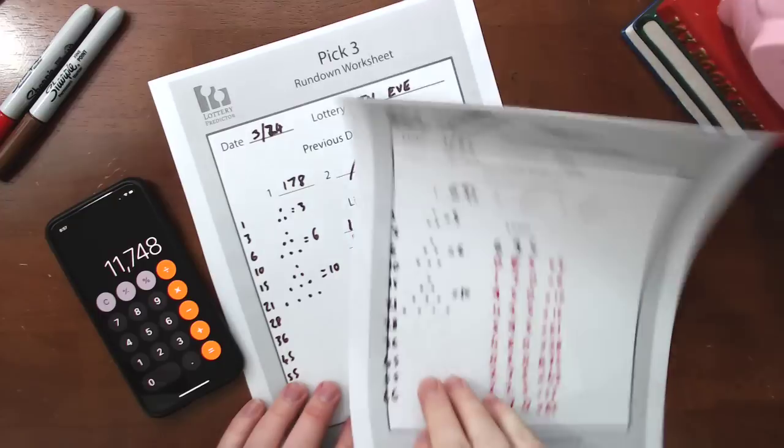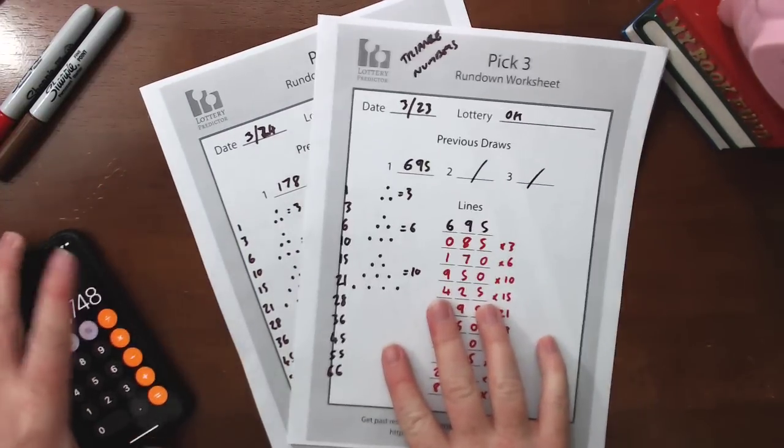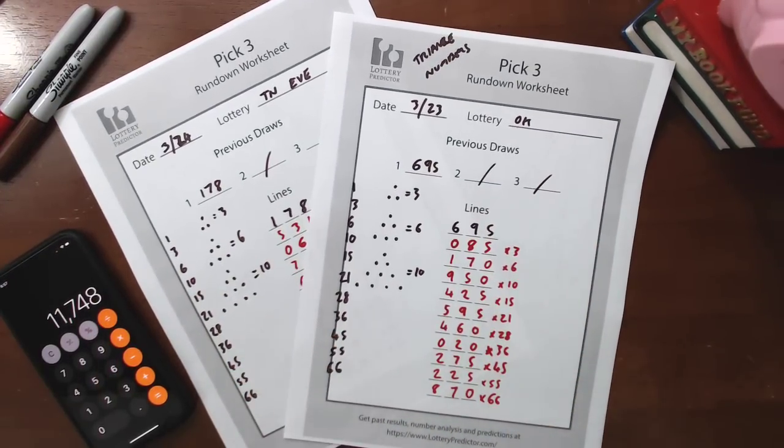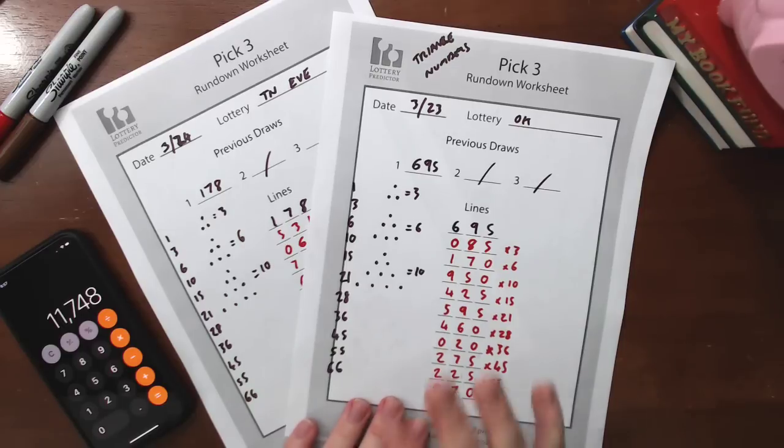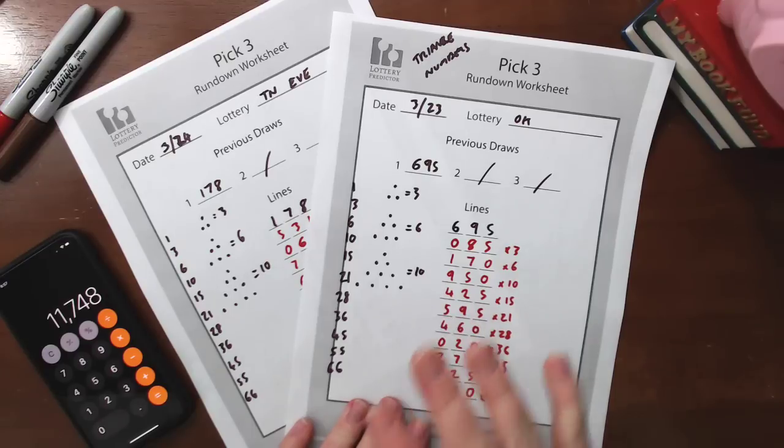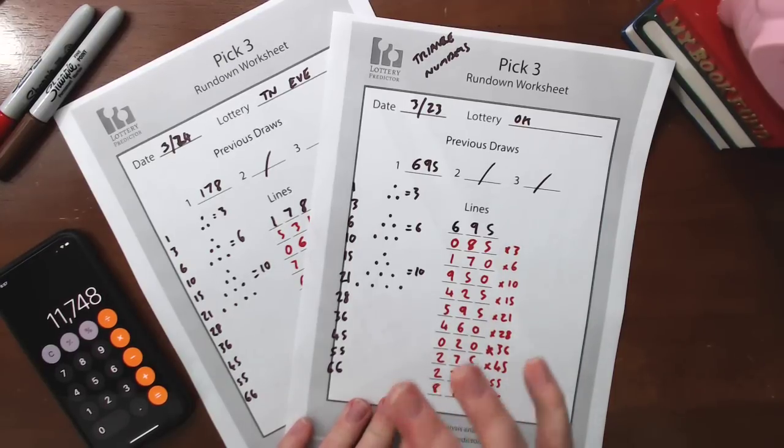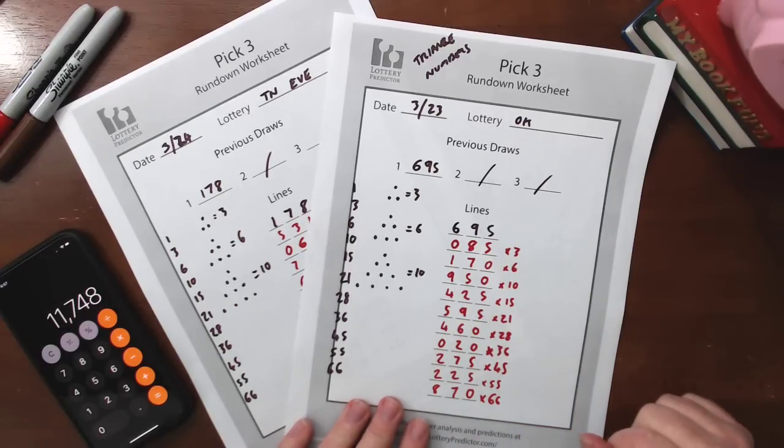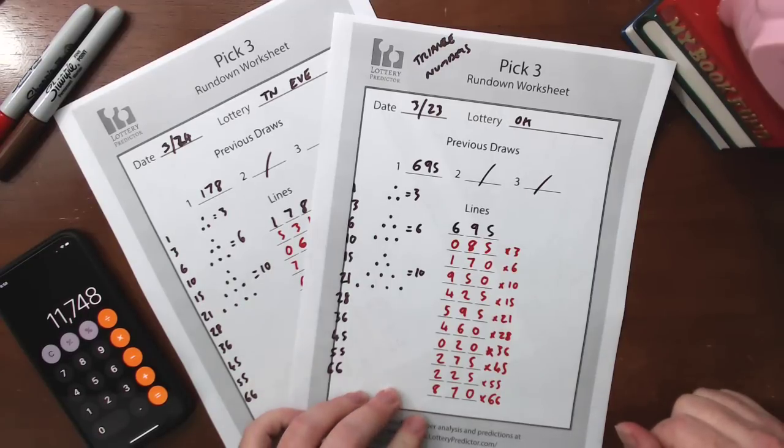So there we go. That is the triangle number Pick 3 rundown. As I said, give it a try in your state. Let me know how it's working for you. If you like these kind of numerology style rundowns where I pick common mathematical formulas, mathematical number patterns and apply them to various different rundowns for Pick 3 and Pick 4, definitely leave me a comment below. I'd like to hear your feedback. Give me a thumbs up for the video if you like it. Subscribe to the channel. And I'll catch you on the next one. Thanks. Bye.